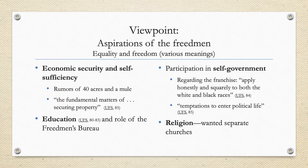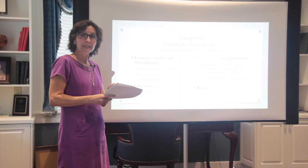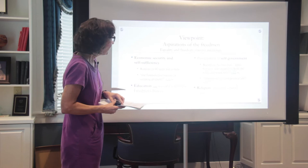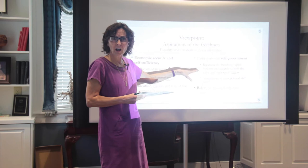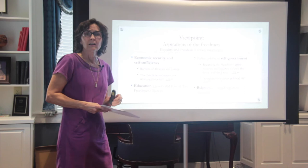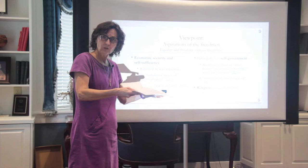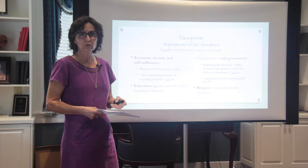Education was one of the things that the freedmen were very clear they wanted at the end of the Civil War — it had legally been denied them during the antebellum period. Some are interested in participating in self-government. And in terms of religion, freedmen wanted separate churches. They had always been forced to worship officially with whites, and so they want to worship as they wish on their own without oversight.